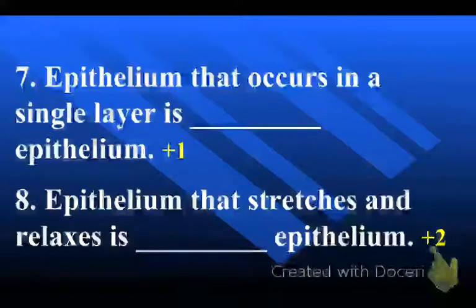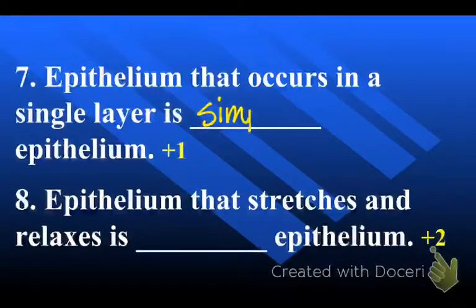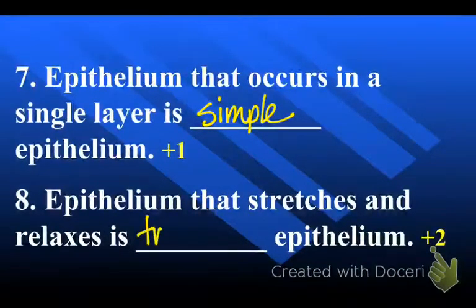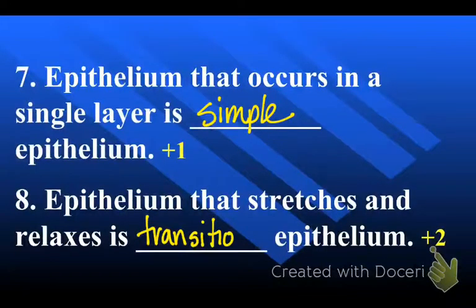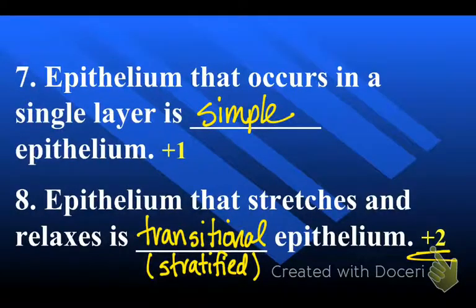Two fill-ins: epithelium that occurs in a single layer is called 'simple' — simple squamous, simple cuboidal, simple columnar. Epithelium that stretches and relaxes is transitional — and really it's called stratified transitional. On the original quiz I made this two points because I wanted the full name: stratified transitional.